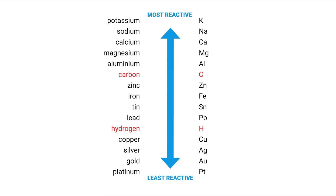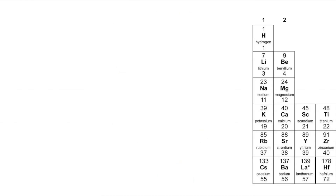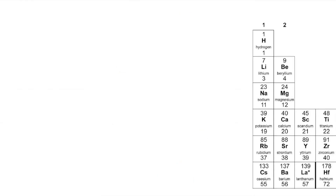So why is potassium more reactive than the other three? Well, in order to explain that we need to go to our periodic table. Here's the left-hand side of our periodic table. The numbers at the top of the periodic table are the group, and that tells you the number of electrons in the outer shell.